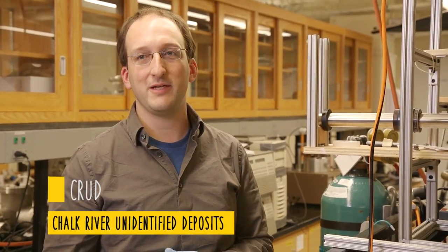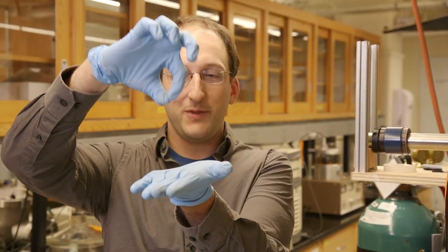It stands for Chalk River Unidentified Deposits. All it is is corrosion products that stick to the fuel rods and get super radioactive. It's one of the big problems in reactors today. And we think we have a way to solve it. The atomic force microscope actually brings a little piece of this CRUD in contact with the material and measures how hard it is to pull it off. And that's the stickiness that we're measuring. But we have to test it out in the lab in this sort of contraption to know if we're right.